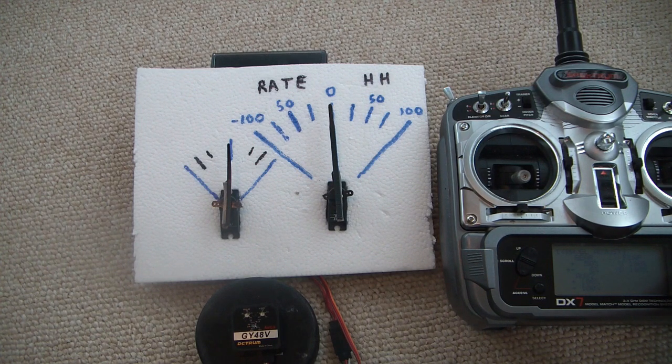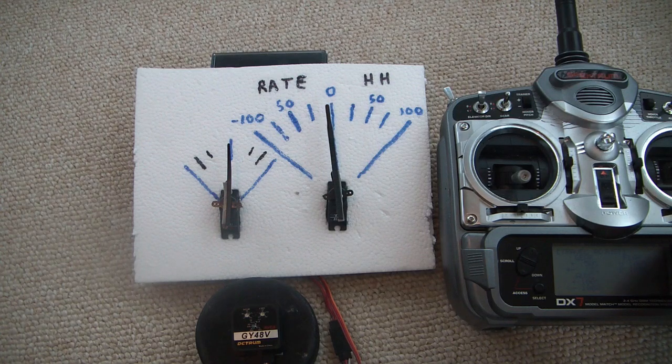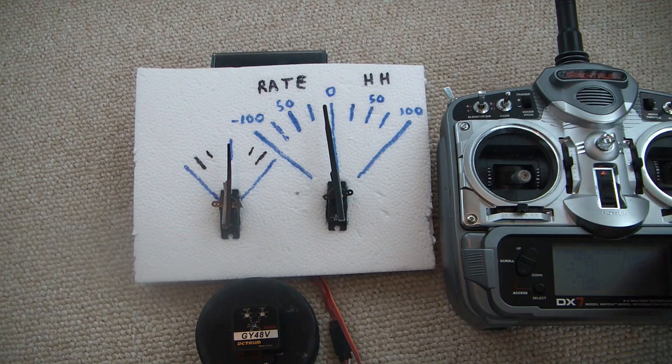So if you hear people say I turn the gyro off using the gain, what they're saying is that they're setting a very, very, very low rate mode gain.